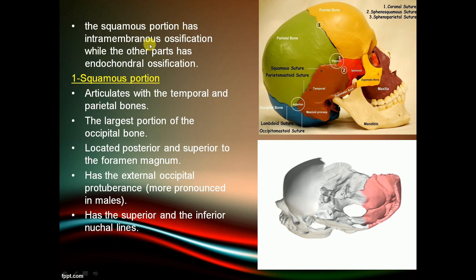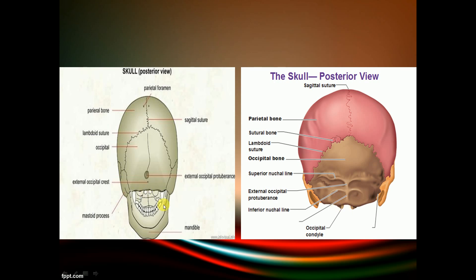The squamous portion of the occipital bone has intramembranous ossification, while the other parts undergo endochondral ossification. The squamous portion articulates with the temporal and parietal bones and is the largest portion, located posteriorly and superiorly to the foramen magnum.